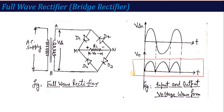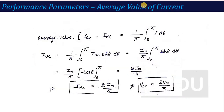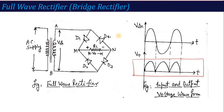The first parameter is the average value of current. We also derived this in the half wave rectifier. The formula for average value is 1 upon T, integrated from 0 to T, of i dθ. The average value is taken over the complete cycle, which is the complete output cycle.